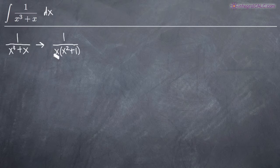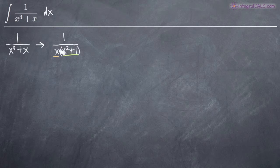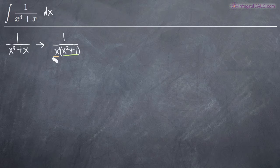We have one factor, x, and a second factor, x squared plus 1. Keep in mind that x is a linear factor and x squared plus 1 is a quadratic factor. Linear factors only have x to the first power or lower. Anything above x to the first power — x squared, x cubed, x to the fourth, etc. — would be a quadratic factor. So x is linear, and x squared plus 1 is quadratic, and we need to treat them differently.